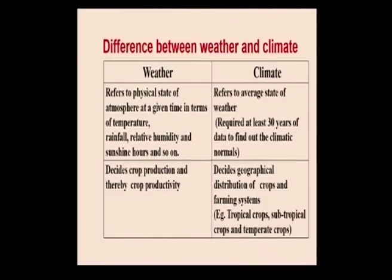Prior to that, let us know the difference between weather and climate, because colloquially people say 'today the weather is fine' or 'today the climate is fine.' So where do we use the word weather and where do we use the word climate? Weather refers to the physical state of the atmosphere at a given time in terms of temperature, rainfall, relative humidity, sunshine, and so on. Climate refers to the average state of weather, requiring at least 30 years of data to find out the climatic normals. Weather decides crop production and thereby crop productivity, whereas climate decides the geographical distribution of crops and farming systems — for example, tropical, subtropical, and temperate crops.